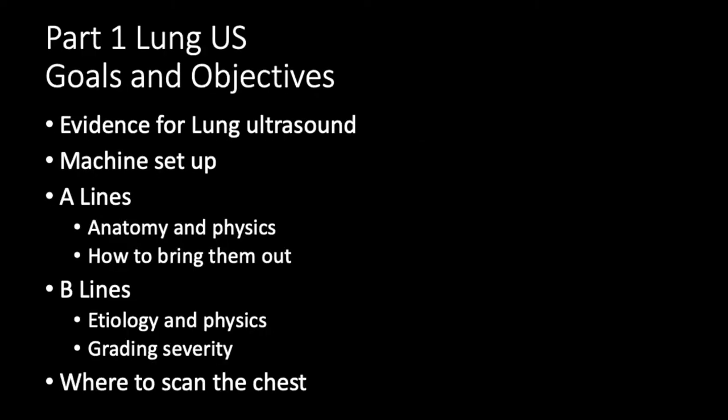For part one of lung ultrasound we're going to go over the evidence for lung ultrasound, setting up the ultrasound machine, and then how to find A-lines — both what they are anatomically and physically and how to bring them out with the ultrasound. They don't come naturally; you've got to work on bringing A-lines out. Then we'll talk about B-lines, what causes them and why they occur, the severity of B-lines, and finally where we should scan on the chest.